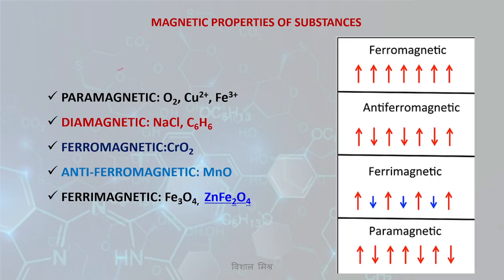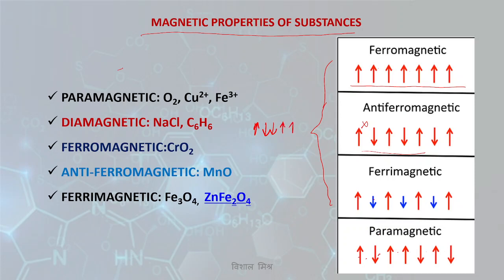Next are magnetic properties. Under magnetic properties we study: paramagnetic, diamagnetic, ferromagnetic, anti-ferromagnetic, and ferrimagnetic. In ferromagnetic substances, all magnetic moments are aligned in the same direction. In anti-ferromagnetic substances, moments are aligned alternately up and down and cancel each other. In ferrimagnetic substances, the up and down alignments are unequal in number. In paramagnetic substances, the alignment is random with no even pattern.